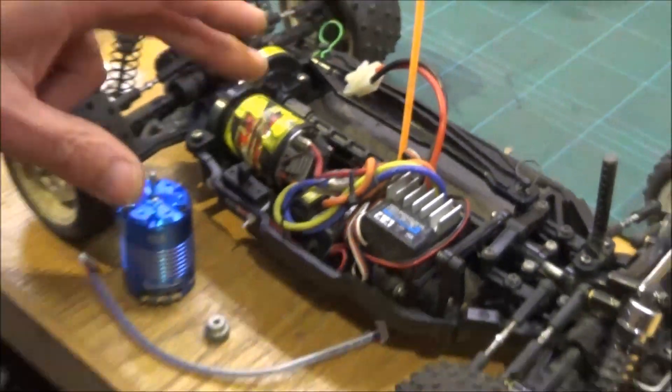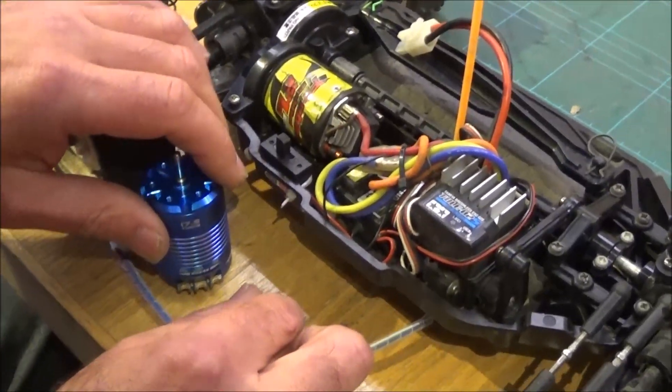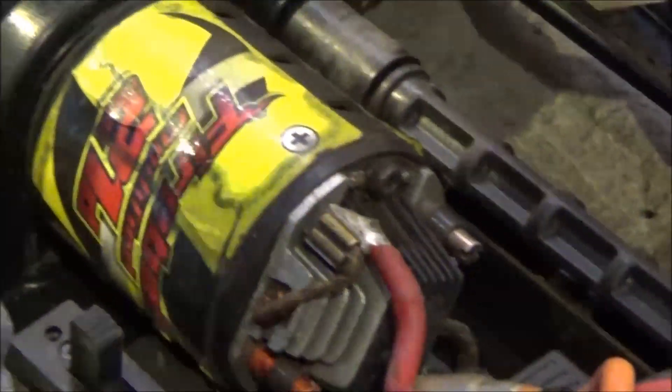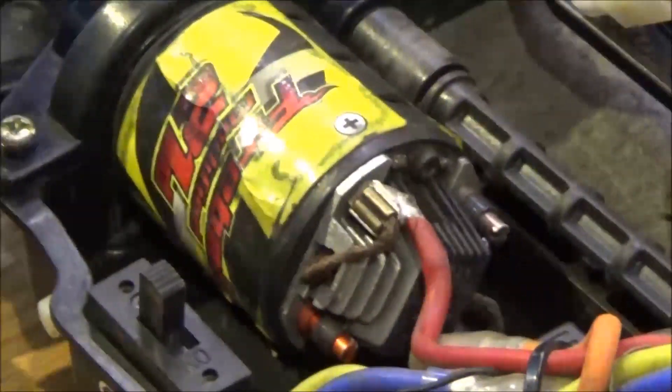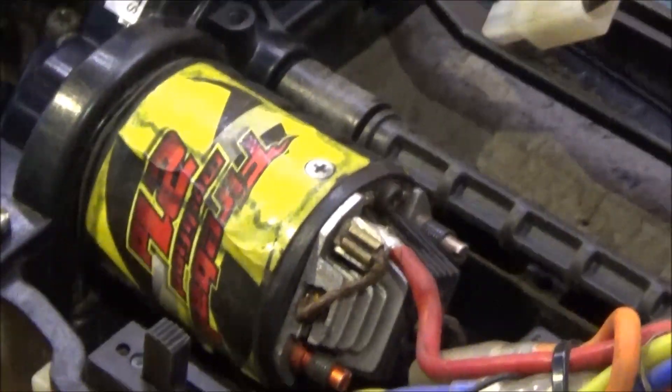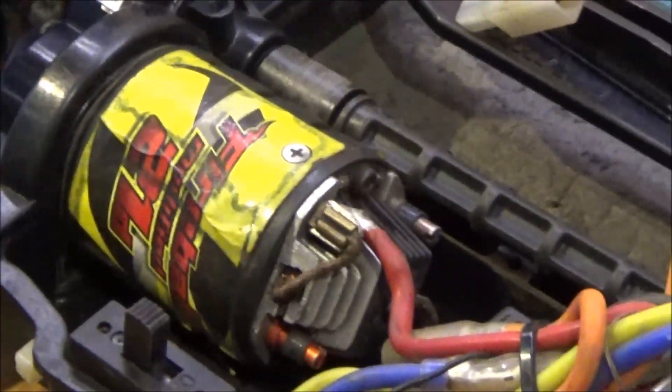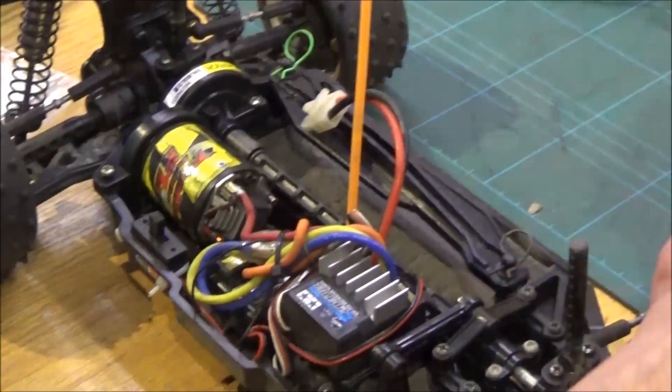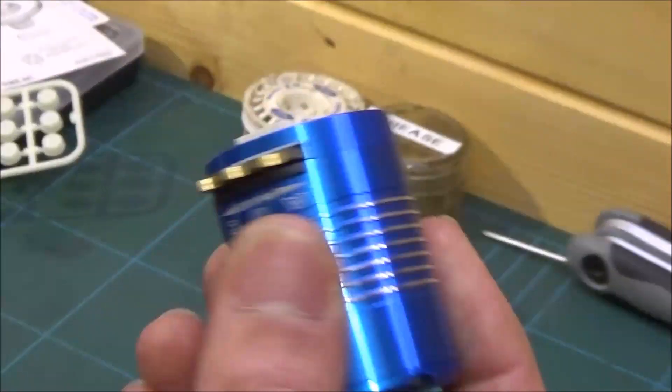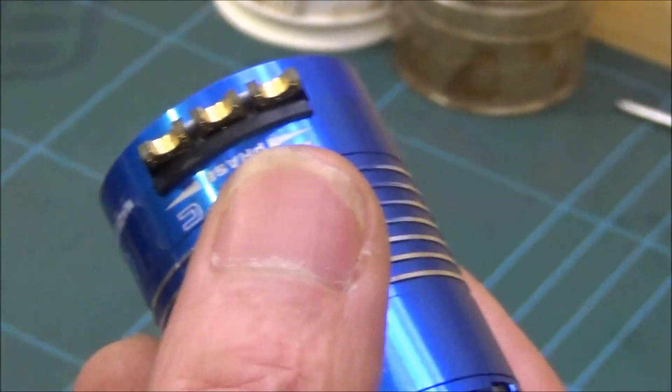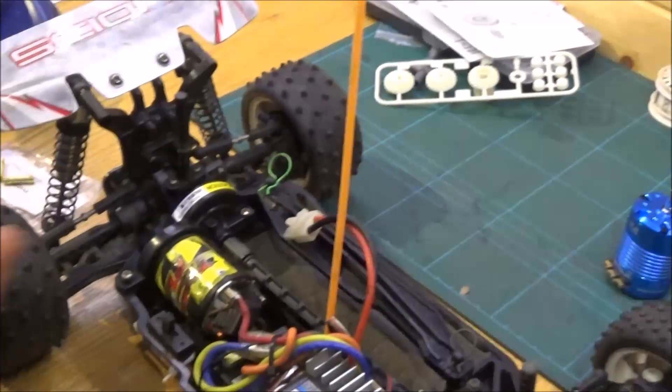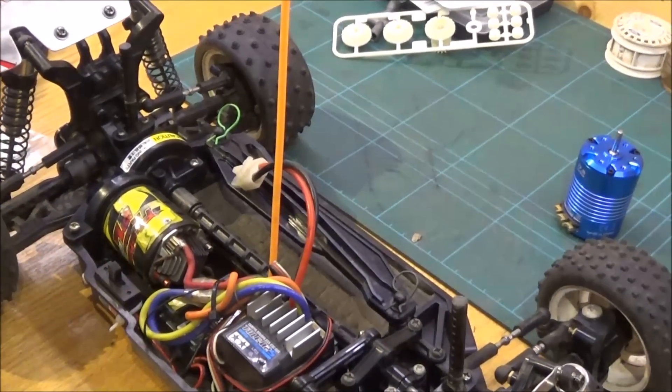You see we've got a 21 turn fireball in there. We need to take that out now. We're going to retain the standard Tamiya ESC, the TBLE, and get it all connected up. I'll show you how to solder the connections onto the new motor and solder some new connections onto the Tamiya ESC. So the first thing we need to do is take the motor out.